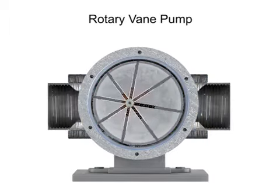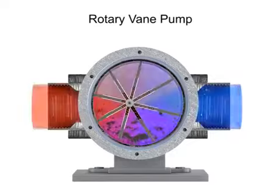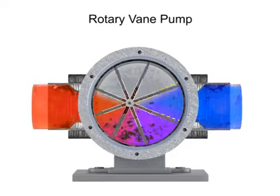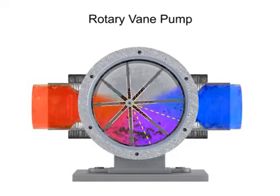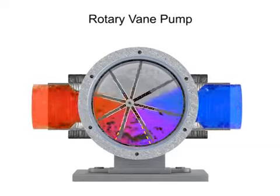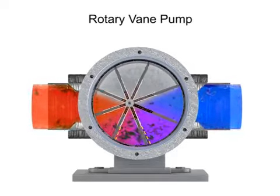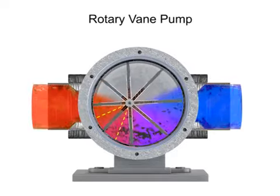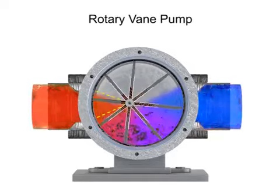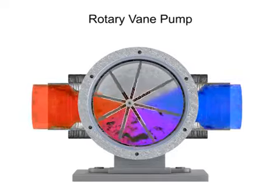Fluid enters at the largest chamber. As the vanes rotate and retract, the chambers get smaller, forcing fluid to exit through the discharge port.